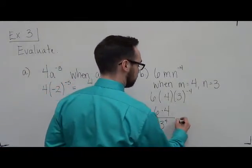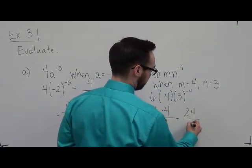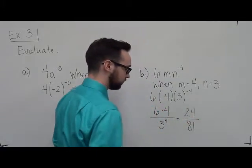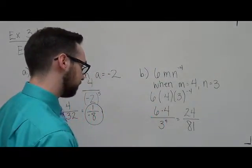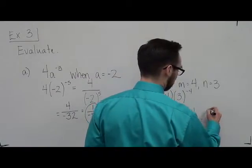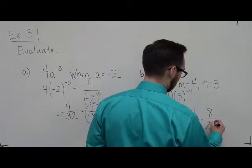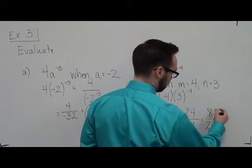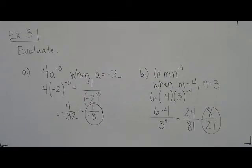So 6 times 4 is 24. 3 to the 4th is 81. We can reduce that by 3. So this becomes 8 over 27. I believe that is as far as that will go. So then your final answer there is 8 over 27.